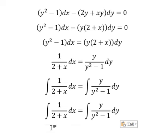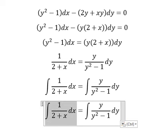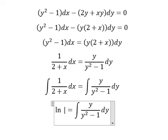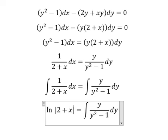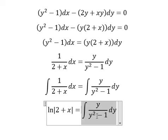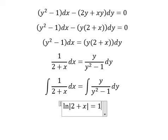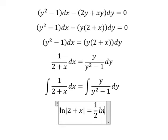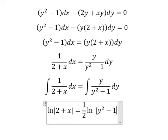So the integration of this one, that is ln of the absolute value of 2 plus x. This equals 1 over 2 ln of the absolute value of y squared minus 1.